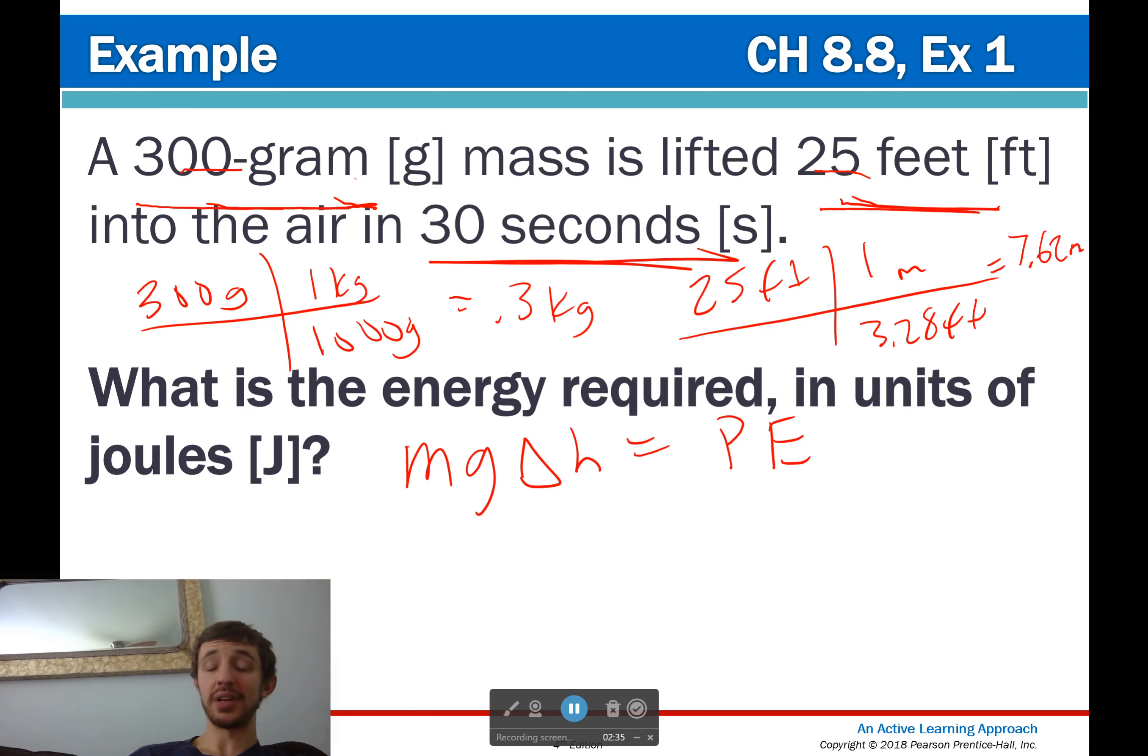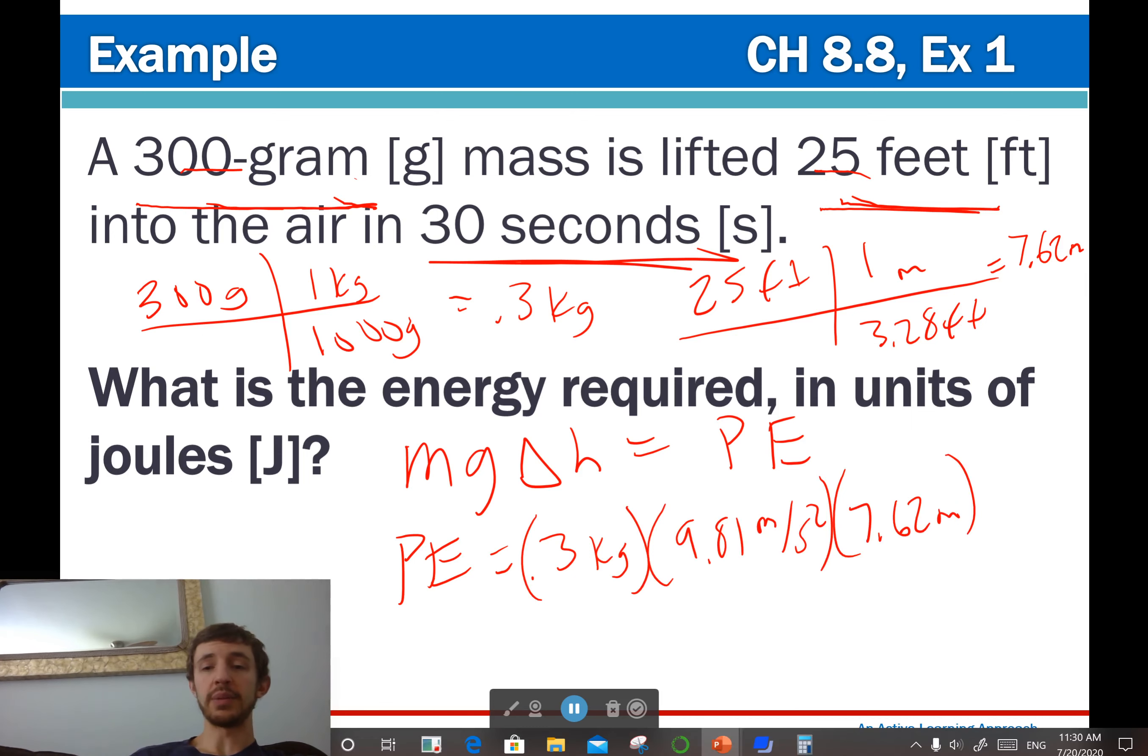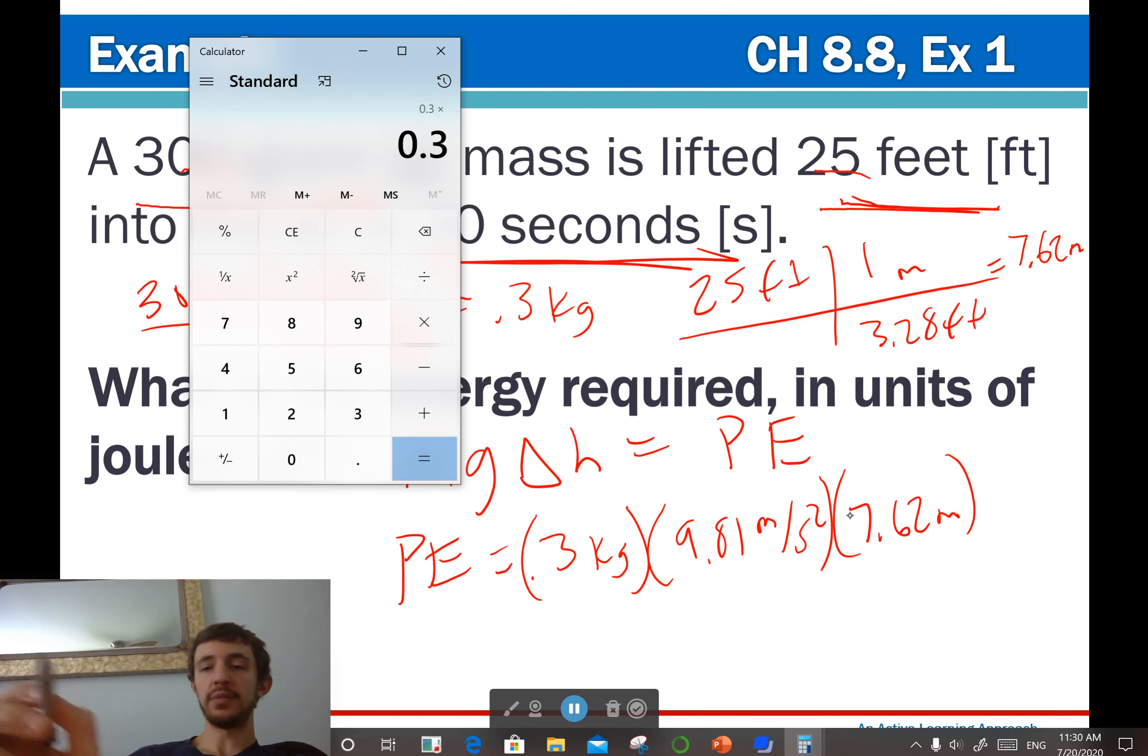And then gravity is 9.81. So, let's plug it in. Potential energy in joules, because we have everything in our base units. Base SI units, it'll just pop out the energy unit. And so, that'll be 0.3 kilograms times 9.81 meters per second squared times 7.62 meters. And all this together will turn into joules.